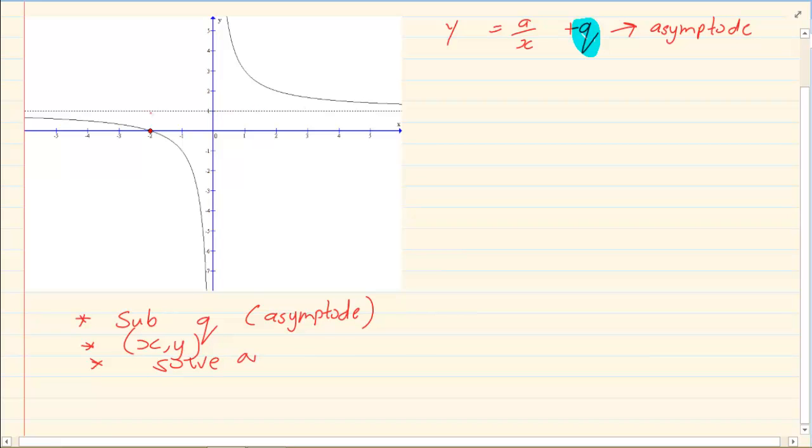So let's look at the following graph. Our asymptote is on 1, so we're going to have y = a/x + 1.